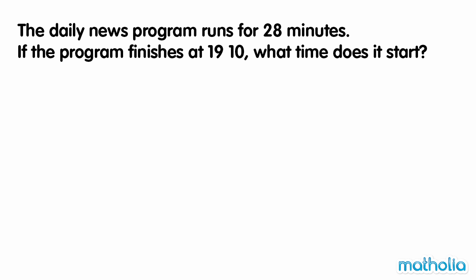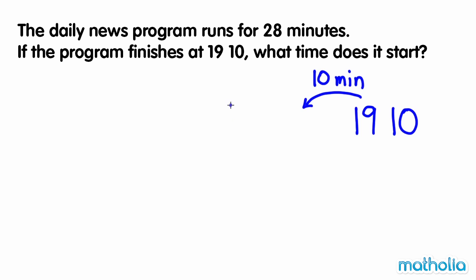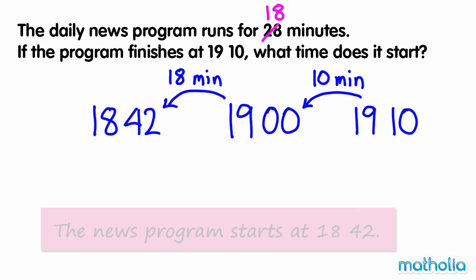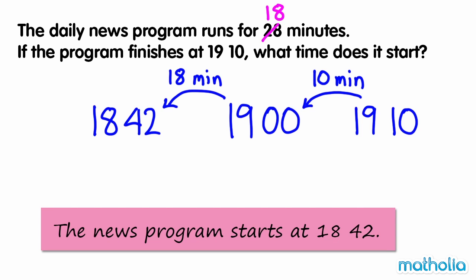Let's start at 19:10 hours and count back 28 minutes. We can count back 10 minutes from 19:10 hours to get to 19:00 hours. 28 minutes subtract 10 minutes equals 18 minutes. 18 minutes earlier than 19:00 hours is 18:42 hours. So the news program starts at 18:42 hours.